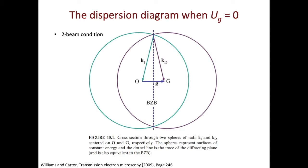Since it's elastic scattering, the magnitude of ki is the same as the magnitude of kd. The corresponding diffraction spots are capital O and capital G. From capital O to capital G, that's the g-vector. Using the capital O and capital G as the centers, we can draw two spheres, or two circles, with k as the radius.